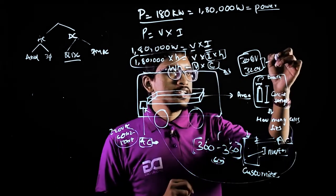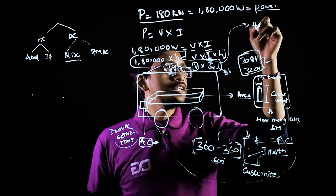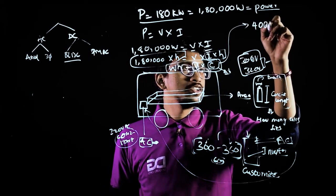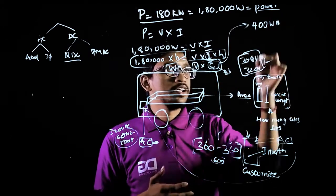So when we actually consider this formula, let me consider Tesla motor. Tesla motor is having a 400 watt hour of motor.